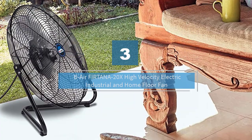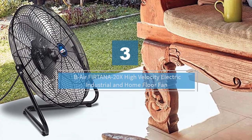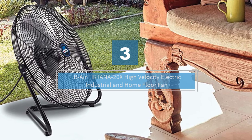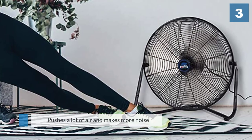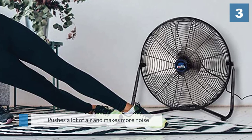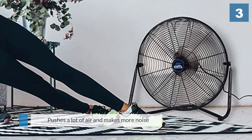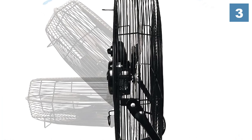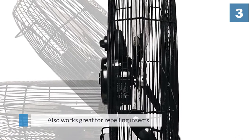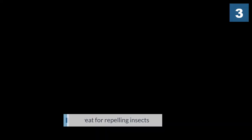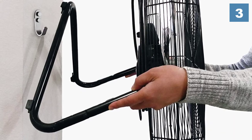Number three: B-AIR FIRTANA 20x High-Velocity Electric Industrial and Home Floor Fan. This unit is an all-metal high-velocity fan from B-AIR. That means that this fan pushes a lot of air and makes more noise than a regular fan. However, it also works great for repelling insects such as flies and mosquitoes.